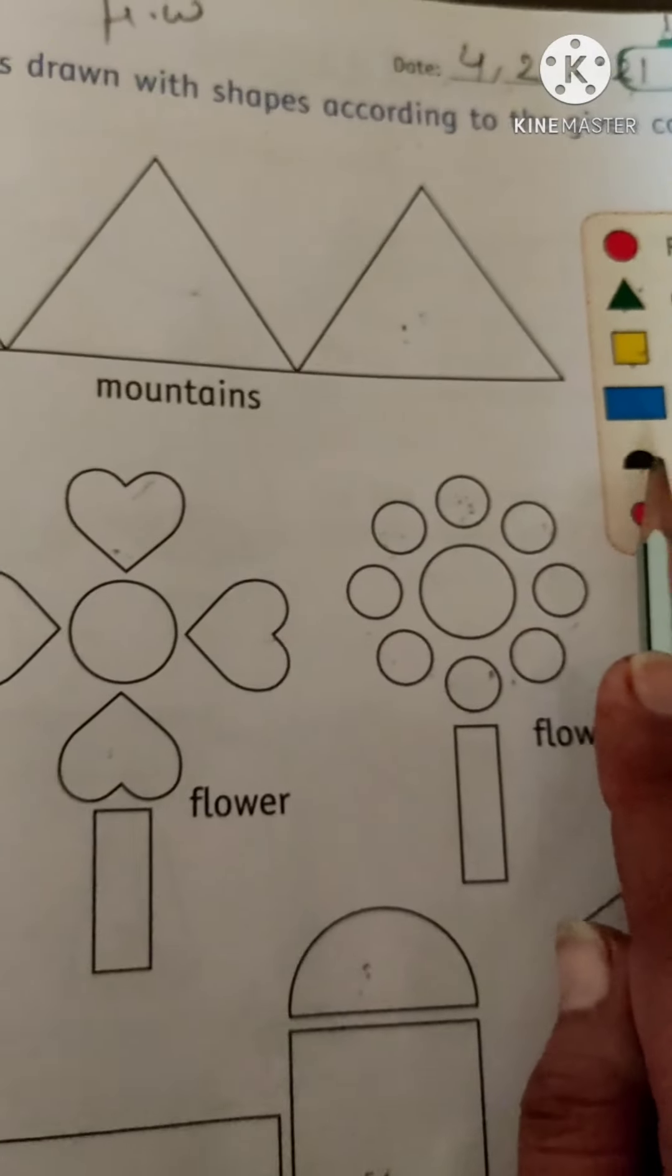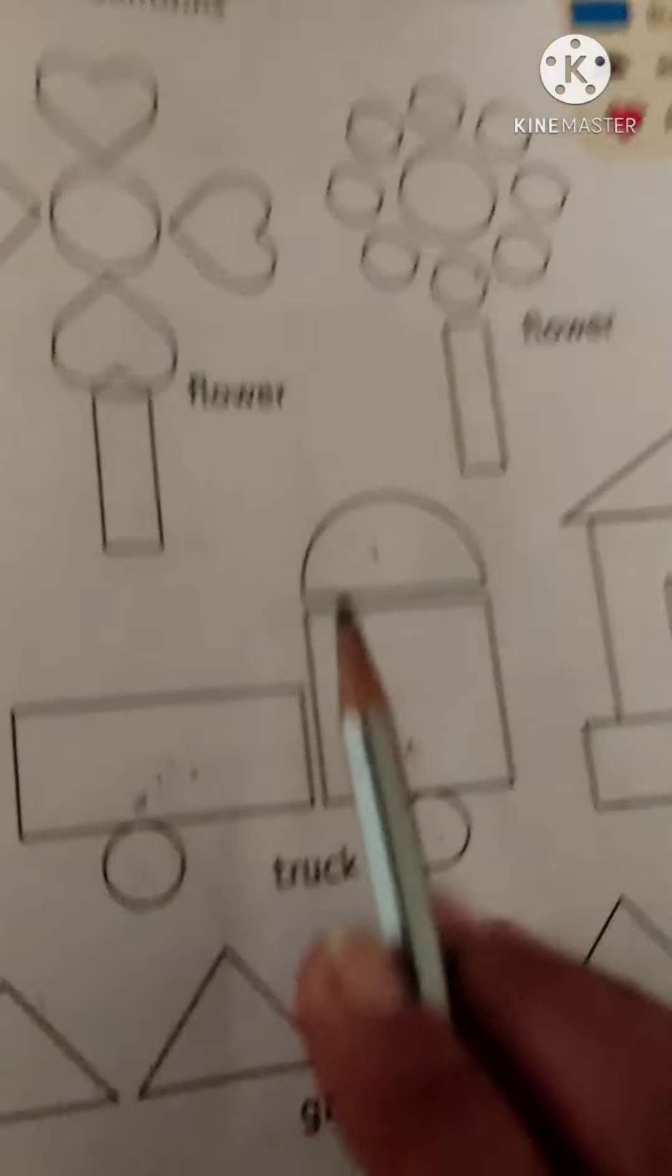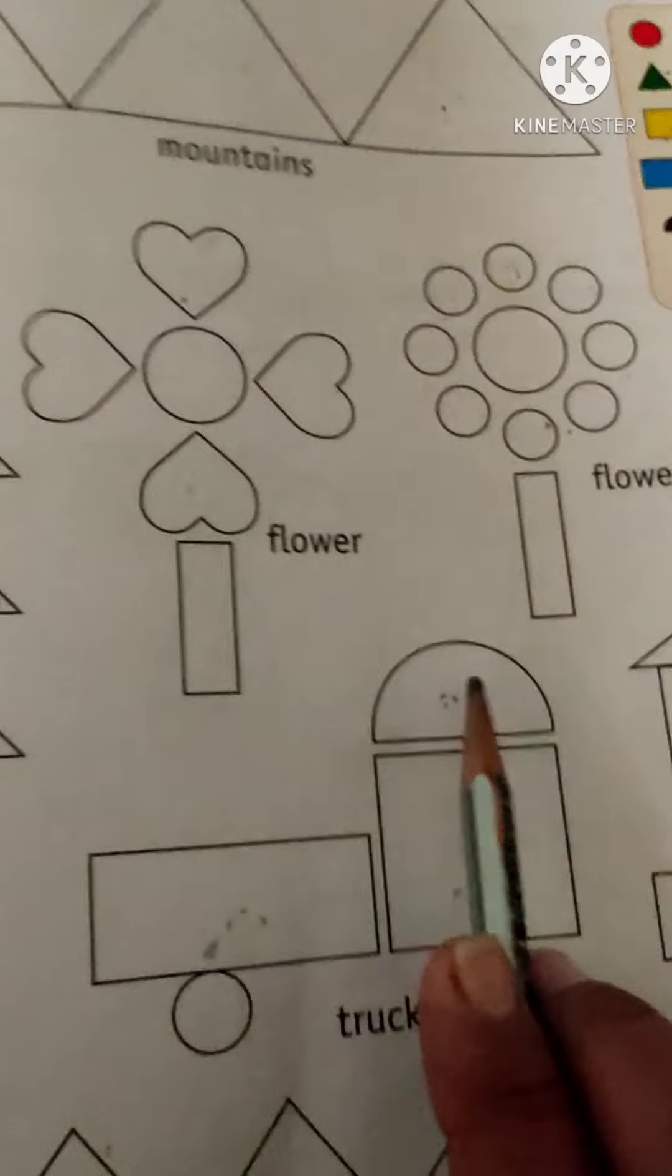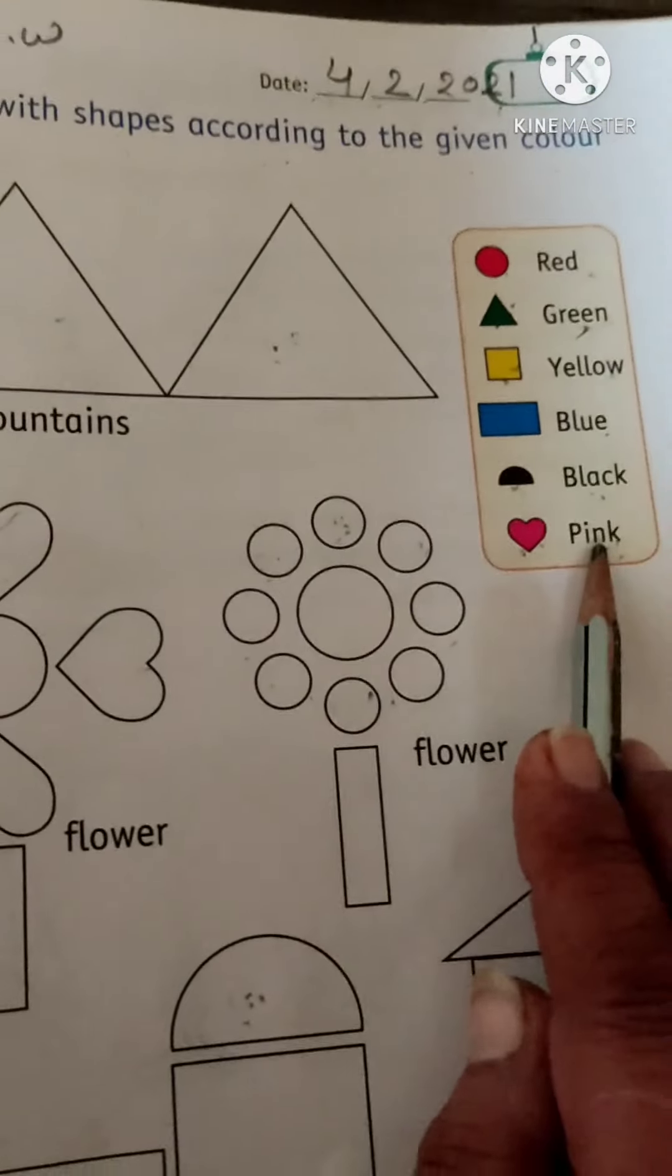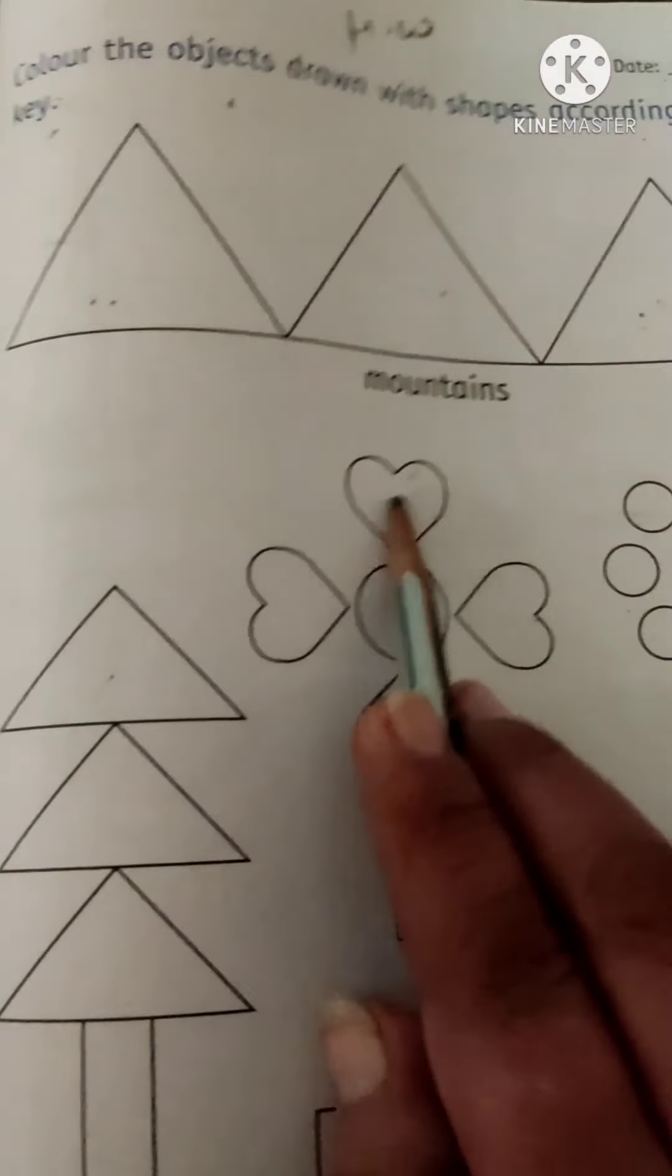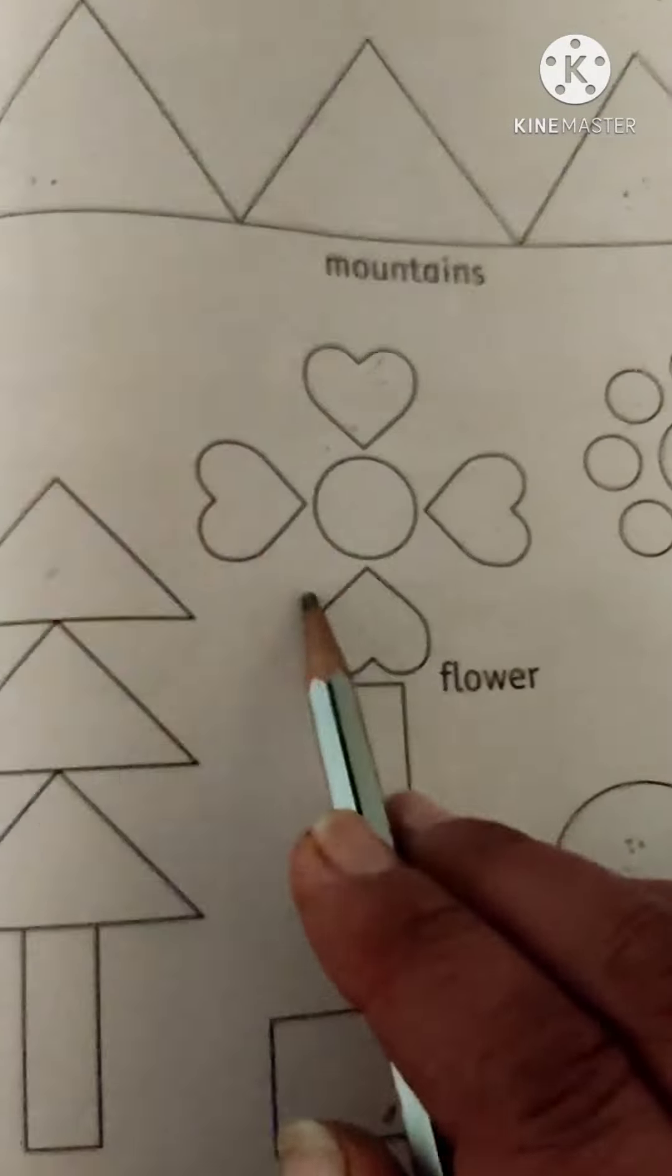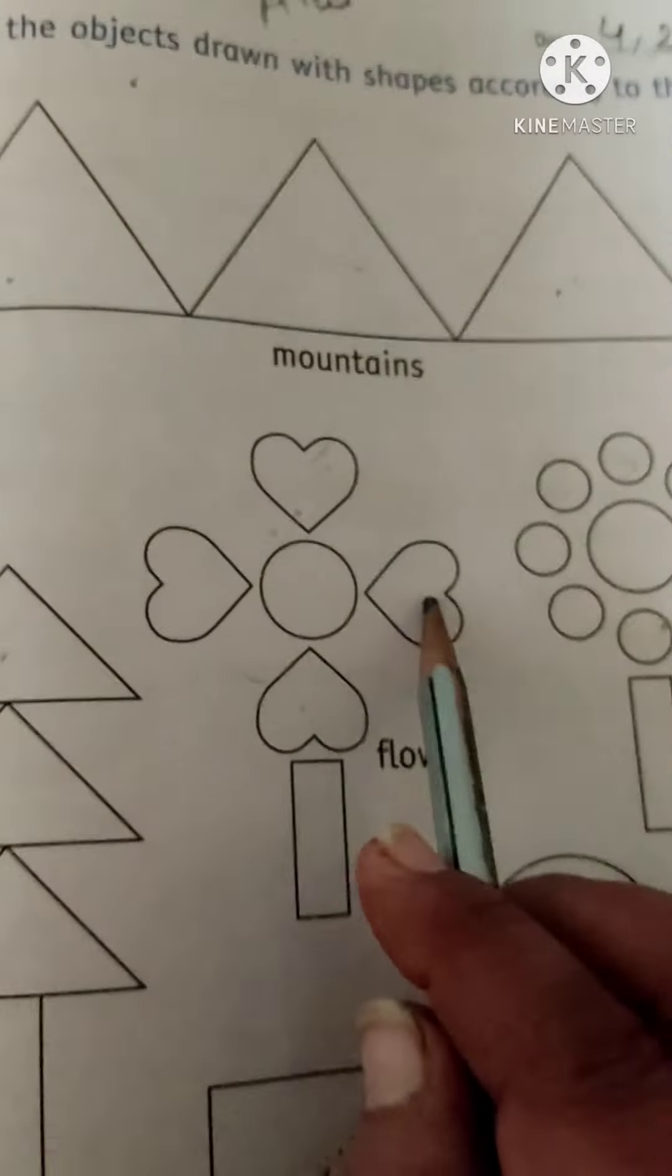Then, black color for the half circle. This is half circle. So, fill black color. And pink color for the heart shape. These are heart shapes. So, fill pink color.